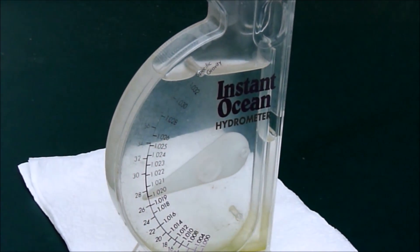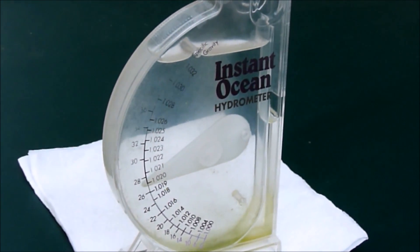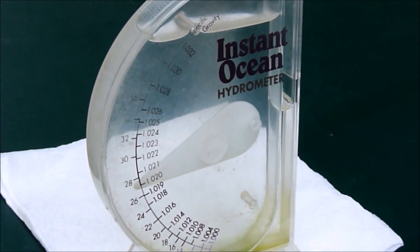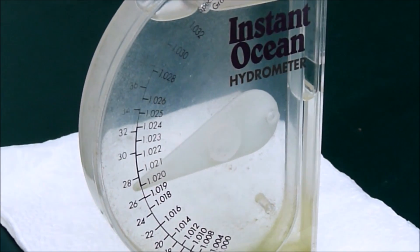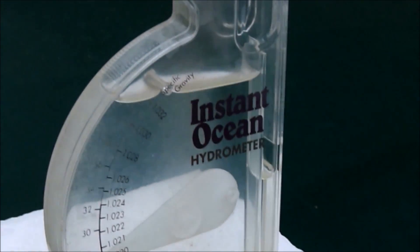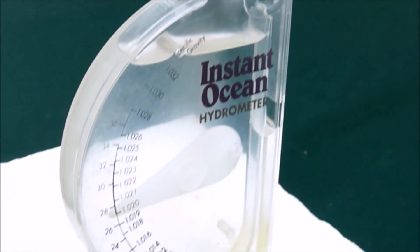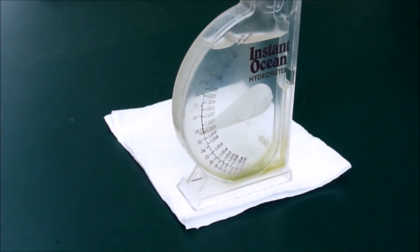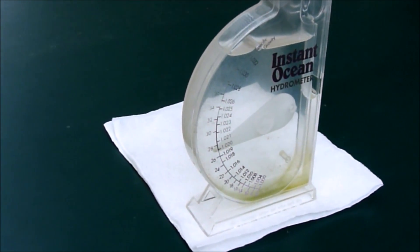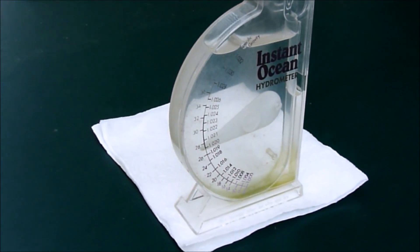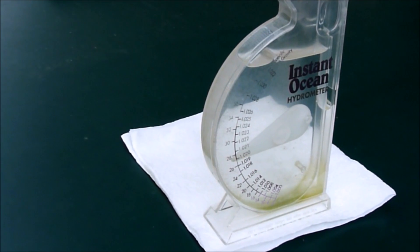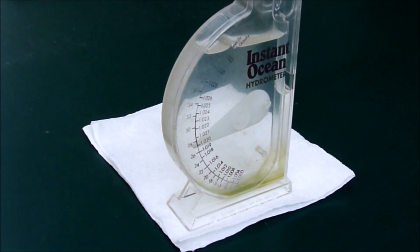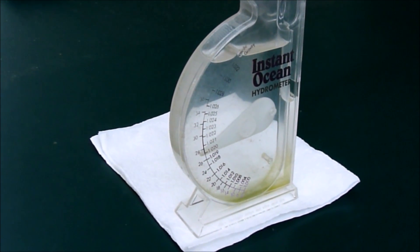Today we're going to talk about salinity in the aquarium. Fish can tolerate between 1.0 to 1.026. Corals prefer a slightly higher salinity between 1.023 and 1.026. If you're just starting out, I recommend a salinity of 1.024, which is pretty close to natural seawater. Seawater is 1.024 to 1.026.